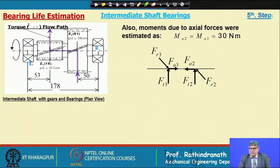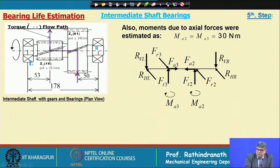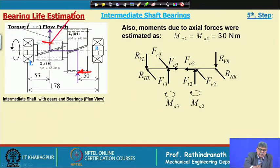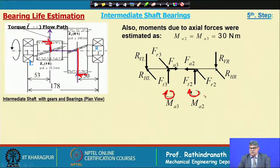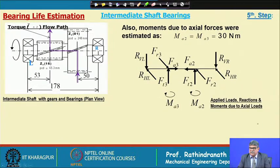Due to this axial load acting at this point in this direction, there is an additional bending moment on the shaft. Sometimes this moment is neglected because the amount of this moment is not much, but for rigorous calculation one would consider this moment along with the bending moment coming on the shaft. This is only 30 Newton meters.